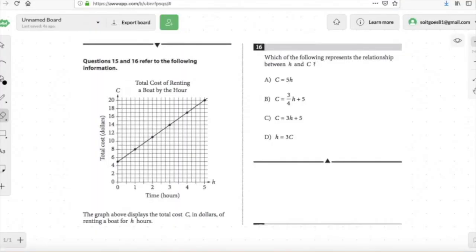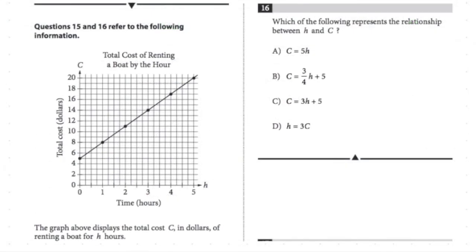We are at Owen. Can you read question number 16 for me please? Which of the following represents the relationship between H and C? Notice this is on the H and C axis — the X value is H and the Y value is C. They're asking you for the equation in Y equals MX plus B form. Let's find the Y-intercept. What's the Y-intercept here, Owen? The Y-intercept is 5 — the line crosses the Y-axis at 5. So I can already eliminate answer choices A and D. It's either B or C.